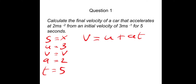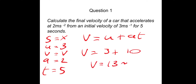That process helps you select which equation to use. The equation is V equals U plus AT. Putting our numbers in: V equals 3 plus 2 times 5. Two times 5 is 10, so the final velocity is 13 meters per second.